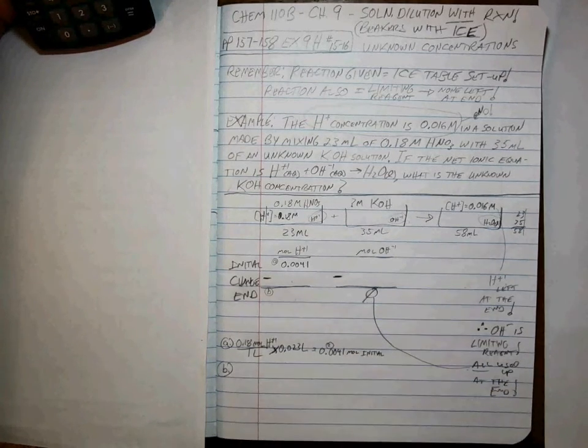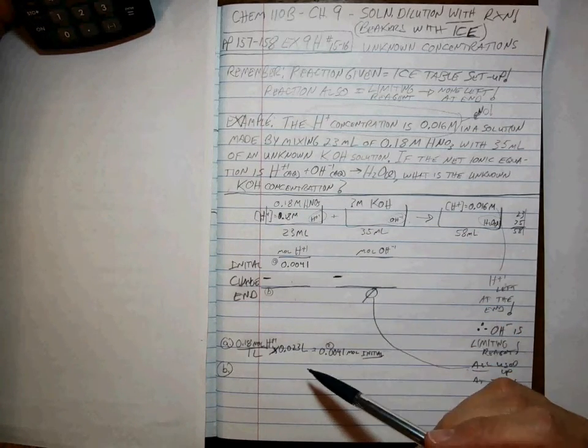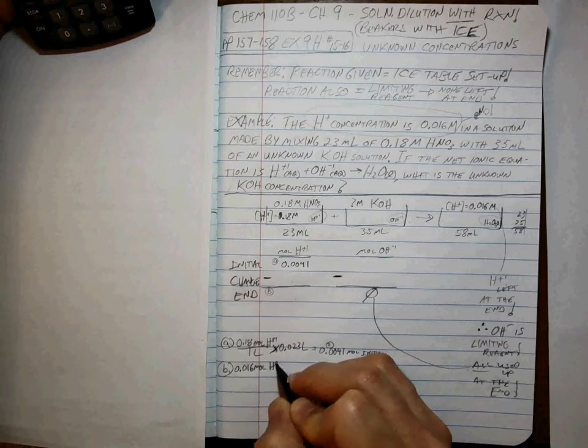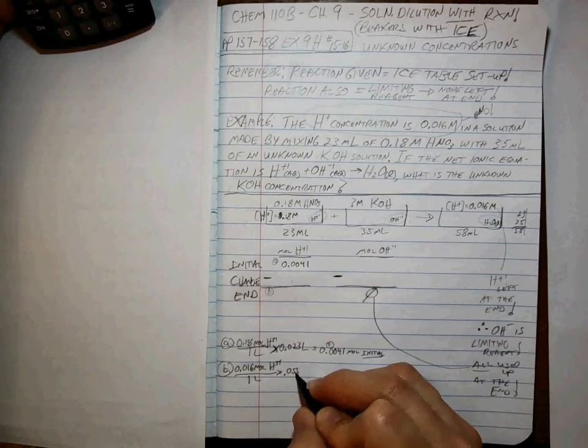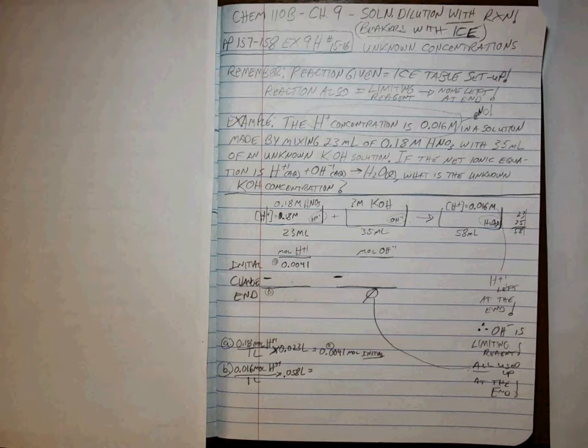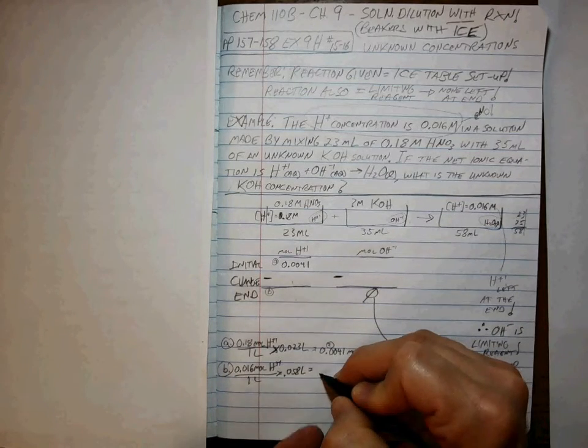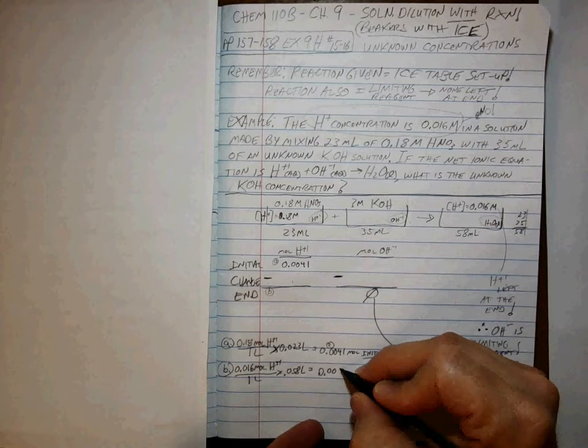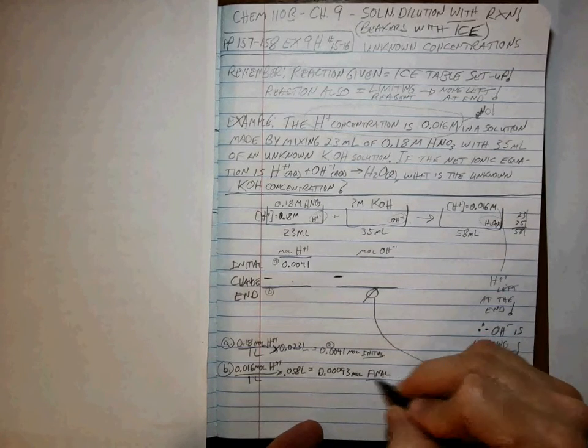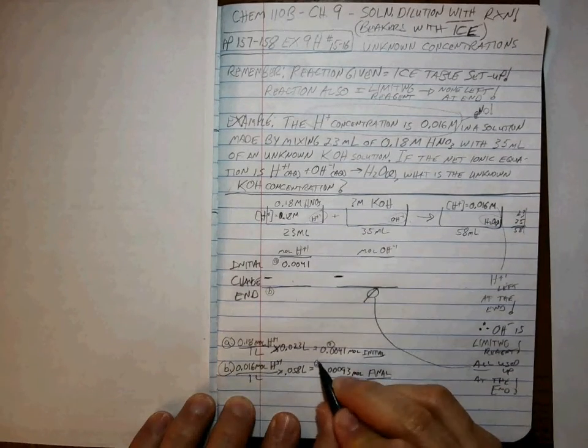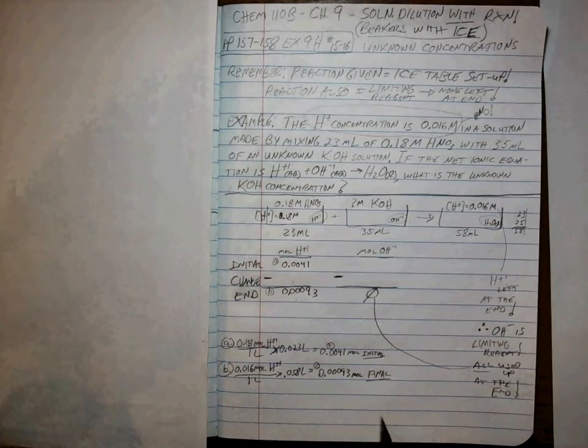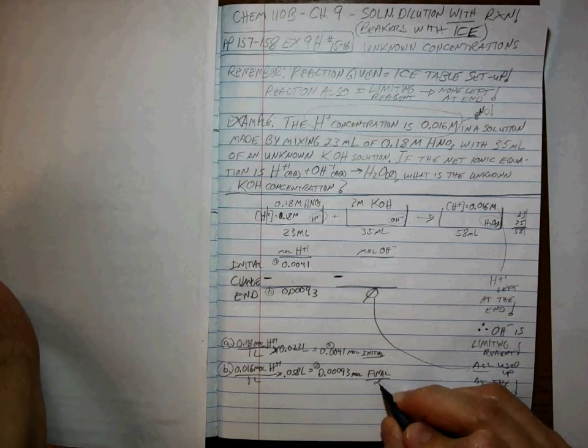That's initial because it was the initial concentration and the initial volume. Now let's take the final concentration in H+ and the final volume. 0.016 times 0.058 equals 0.00093 moles final to two sig figs.